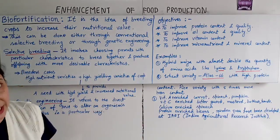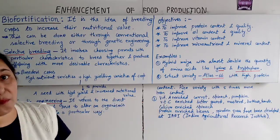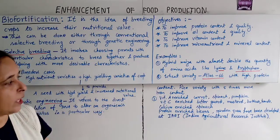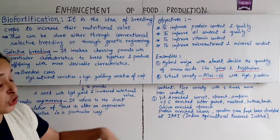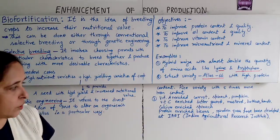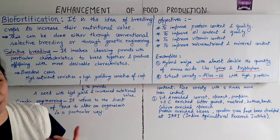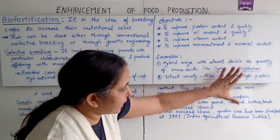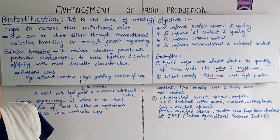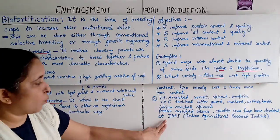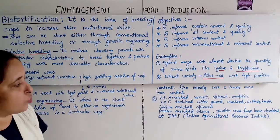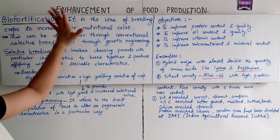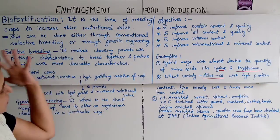Vitamin C enriched bitter gourd, mustard, and batua — batua is a leafy vegetable. Tomato. Calcium enriched spinach. Protein enriched beans and garden pea. These have all been developed at IARI — the Indian Agricultural Research Institute — by the process of biofortification.